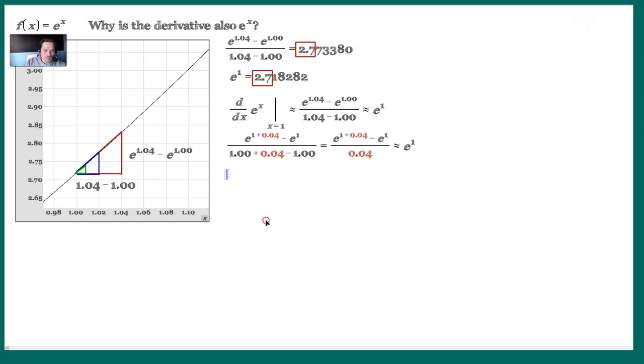So in general, what I would do is I would write this quantity this way. I would say e^(1 + h), where h is the size, roughly speaking, of the horizontal leg there on the bottom. And I would subtract the value of the function at e^1. And then I would divide that by the size of the horizontal leg, which is h.